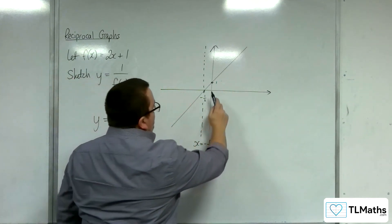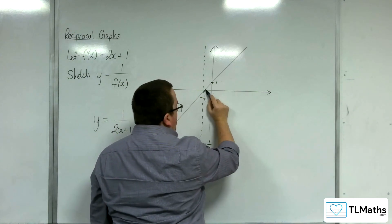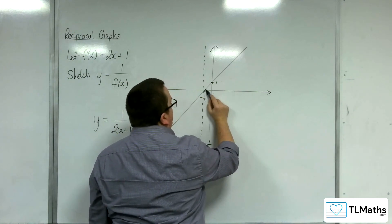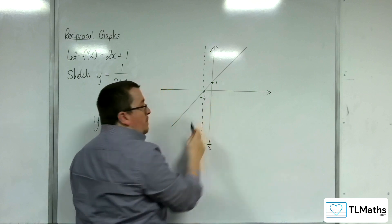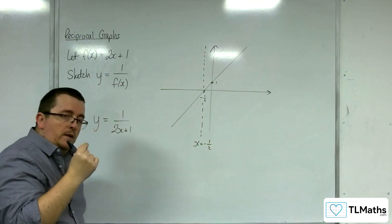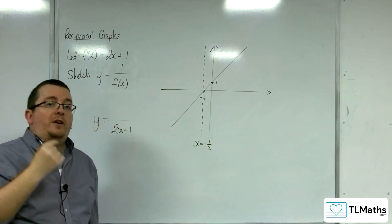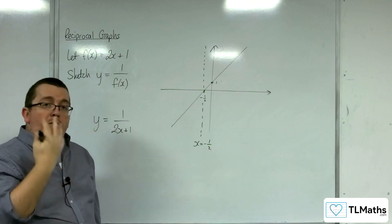Now, at this point here, which is very close to when x is minus 1 half, our value of the original function will be close to 0. So if you've got 1 over something that's close to 0, you're going to have a very large number.